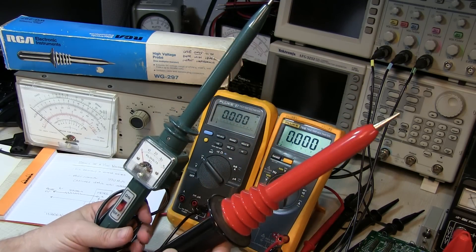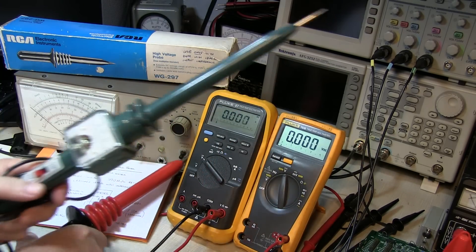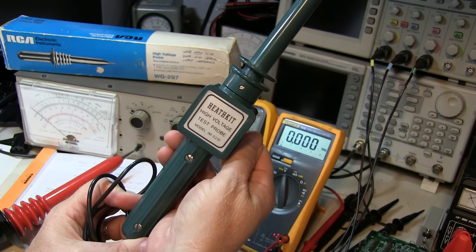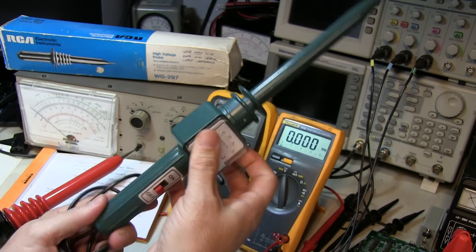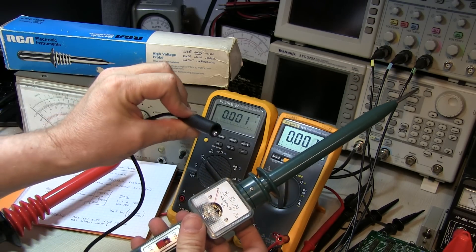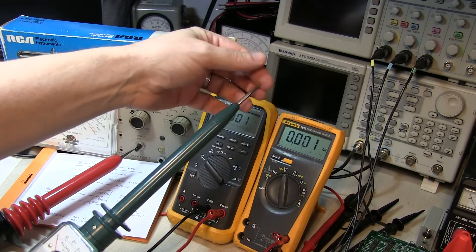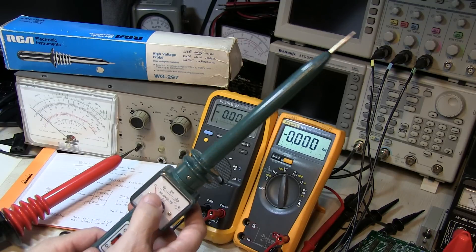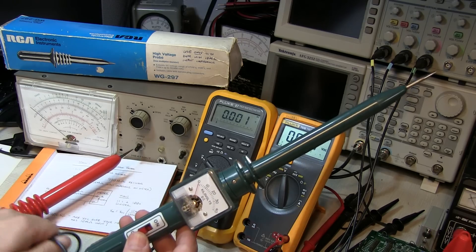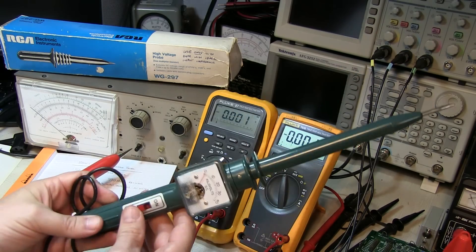Now I've got two different types here. This first one is a Heathkit, model IM 5210, and it's a standalone so you don't need an external meter. You just hook up the ground lead to ground and touch the point here to high voltage, and you can read directly up to 40 kilovolts. So not as common, you might not see these around so much.